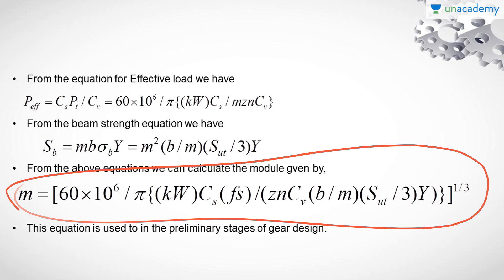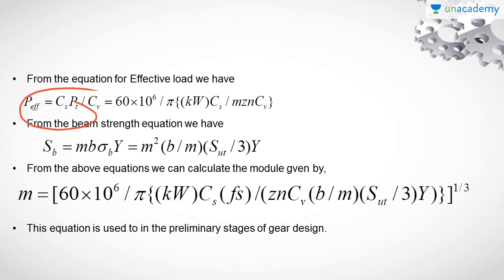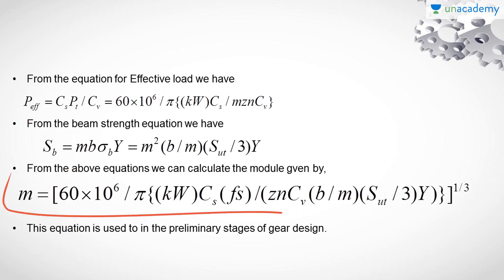This equation is used in the preliminary stage of gear design. In the preliminary stage we use P_effective equals CS into PT divided by CV. In the final stages, we introduce another value PD which is the dynamic load. In the preliminary stage only, we use this equation for module calculations. For the final stages, we use P_effective with another equation where we have the dynamic load term PD, which is presented in the lecture about the dynamic load on the gear tooth of mating gears.